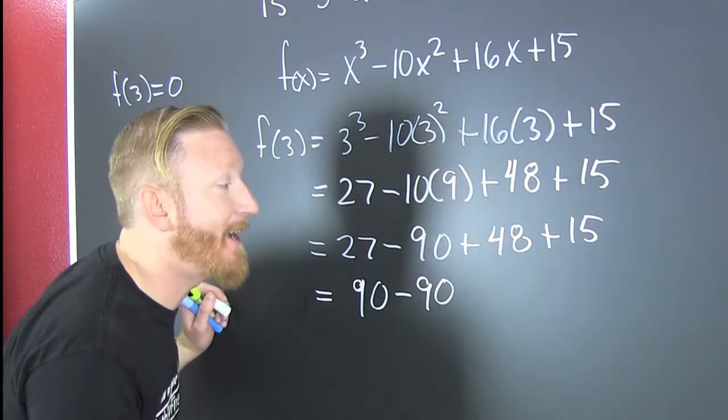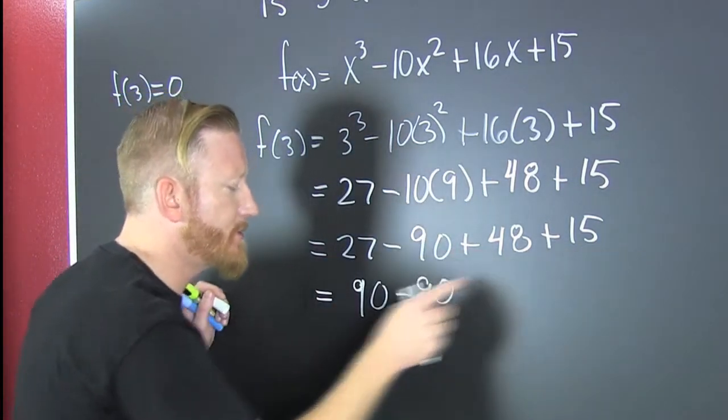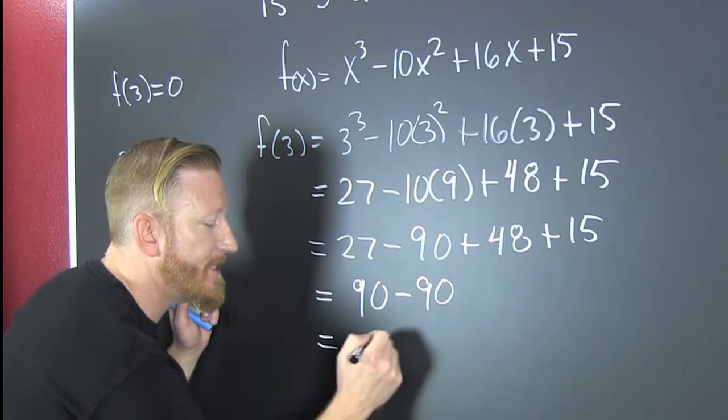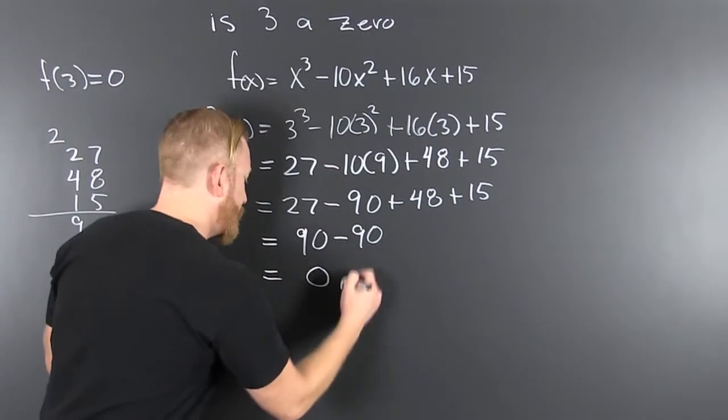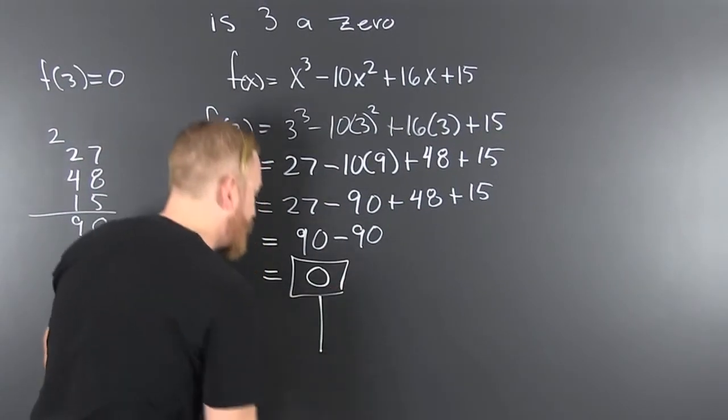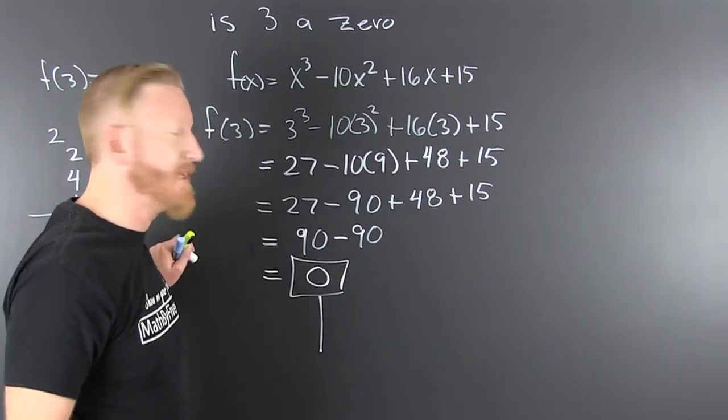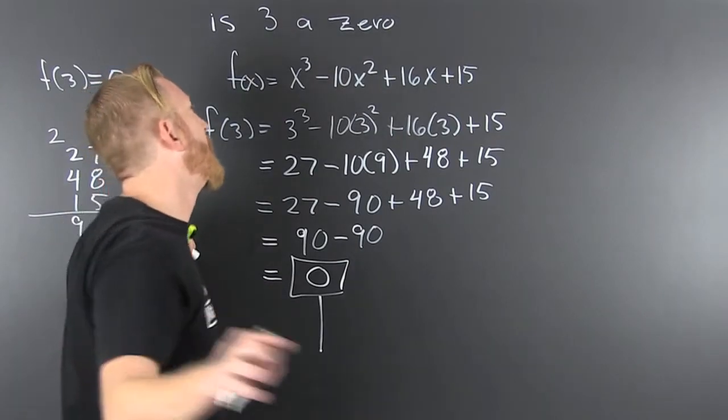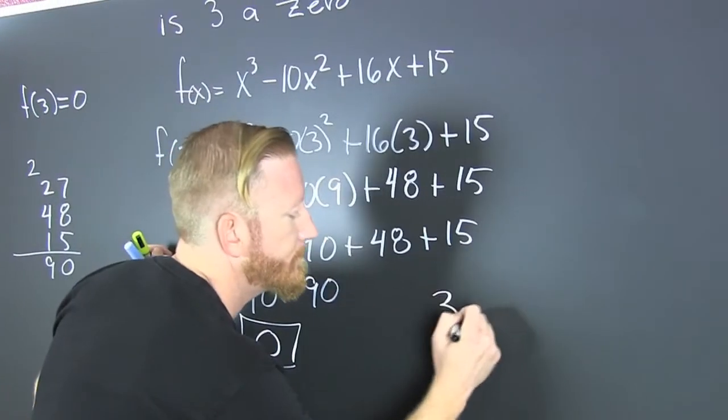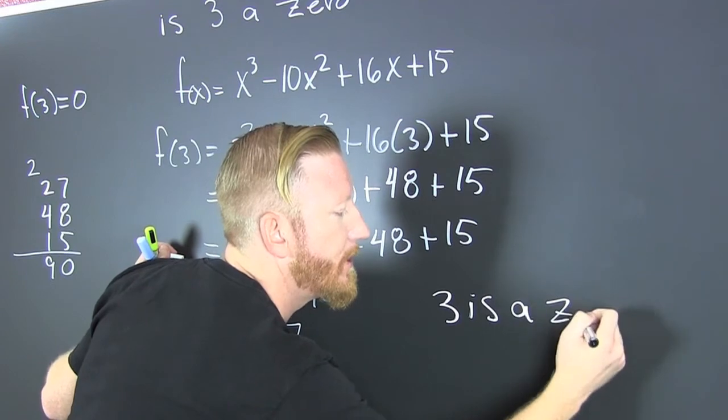I added all of those and got 90 and the difference is 0. So what do we have? Sucker. Really licked that problem. It was sweet? No. 3 is a zero.